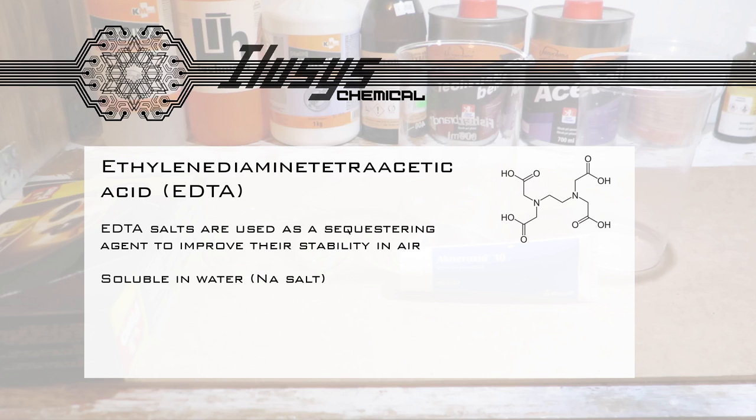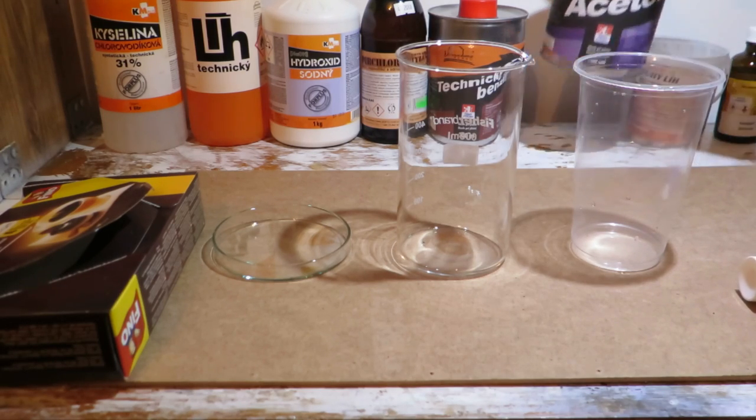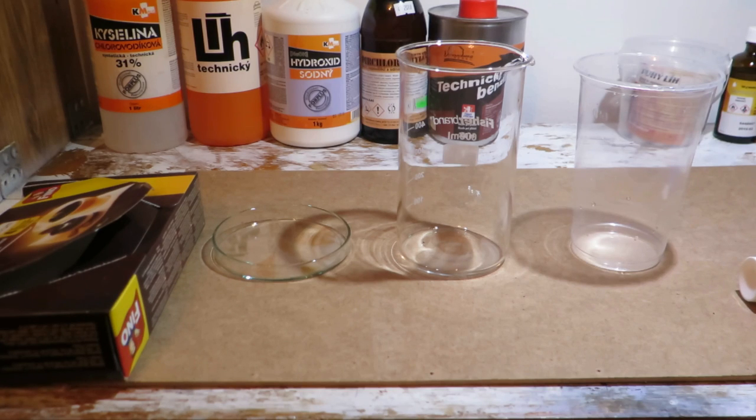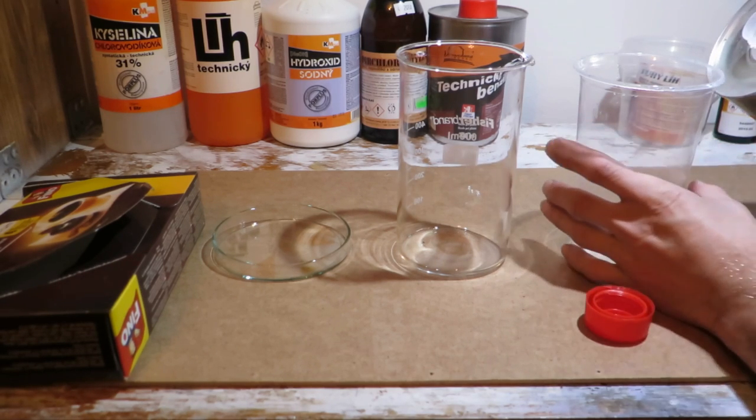Ethylenediamine tetraacetic acid or EDTA is soluble in water. Sodium hydroxide is used as stabilizer. The product contains water that increases polarity of our solvents, so we have to use a lot to dissolve benzoyl peroxide.